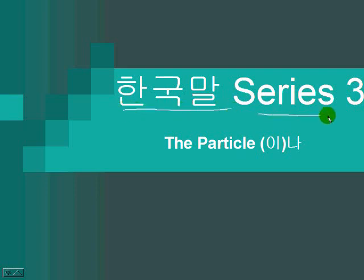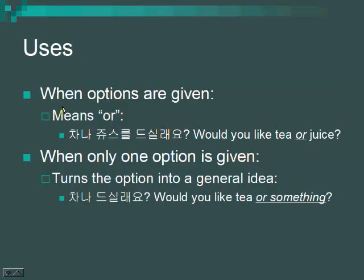This is the 한국말 series 3, covering the particle 이나 in Korean. When options are given, it can mean 'or'.